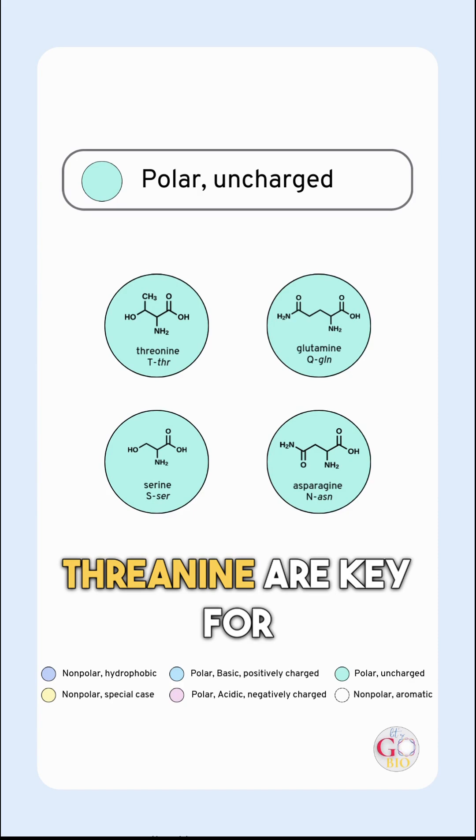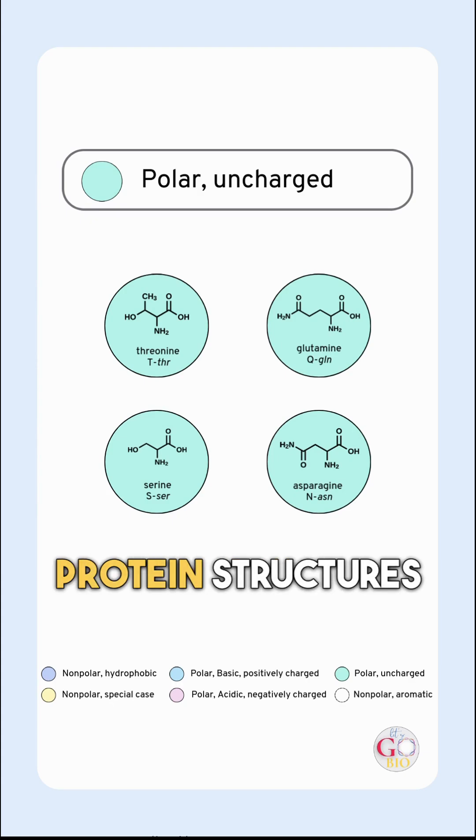Some, like serine and threonine, are key for cell signaling, while asparagine and glutamine help stabilize protein structures through hydrogen bonding. They are small but mighty.